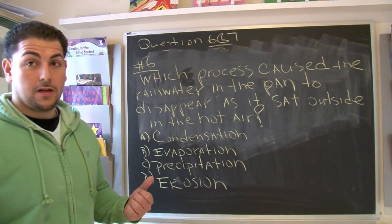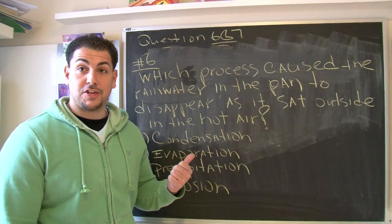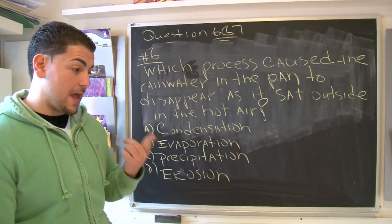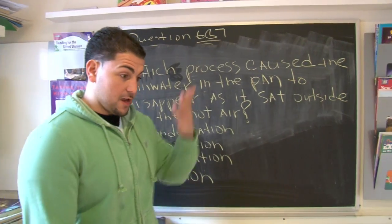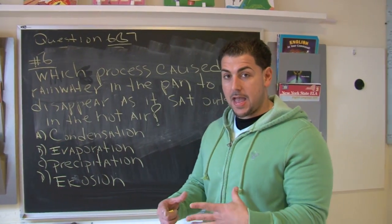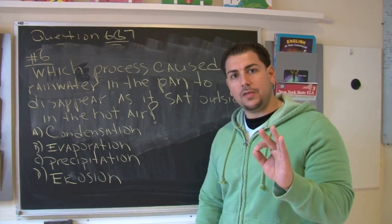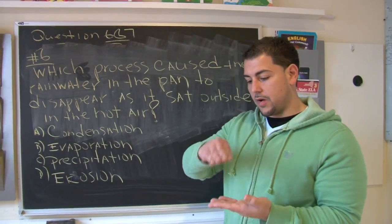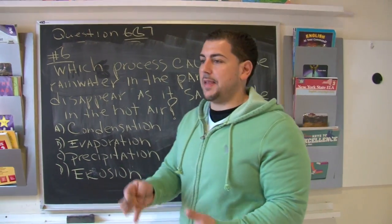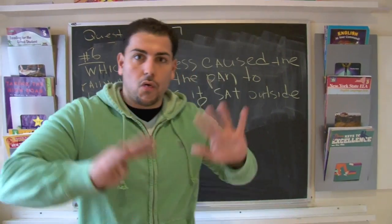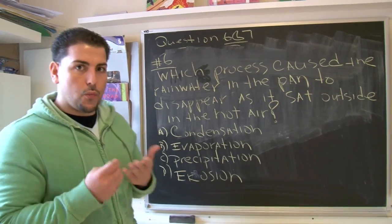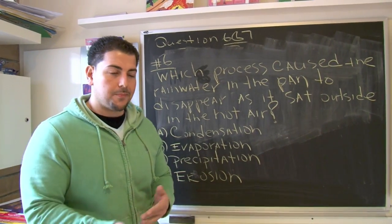We're back. What happened was it rained very heavily and we left out a pan, and about two centimeters of water had filled up the pan. But then about four hours later, for some reason, all the water was gone. So what we're trying to figure out is where did the water go?